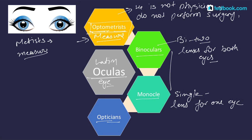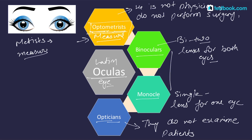Opticians fill prescriptions from optometrists or ophthalmologists, grinding lenses according to specification. Opticians do not examine patients, are not physicians, and do not perform surgery. The optometrist, by etymology, is one who measures vision — the specialty is optometry. The optician's specialty is optics.